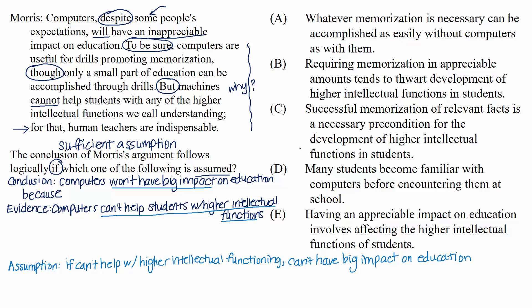If we assumed this to be true, then Morris' argument would be ironclad. The evidence would flow directly to the conclusion via this assumption, and that is exactly what a sufficient assumption does. So we have a super strong prediction, and that's a great goal to have for sufficient assumption questions. If you have a really strong prediction, you are much less likely to get lost in all the choices. You might be able to quickly scan and just find your match on test day within seconds.